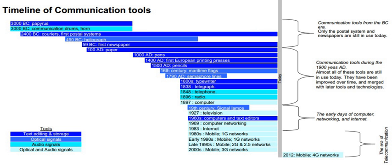1998 – Lotus Notes software is launched. 1999 – 45% of Australians have a mobile phone. 1999 – Sirius satellite radio is introduced. Napster peer-to-peer file sharing is launched.